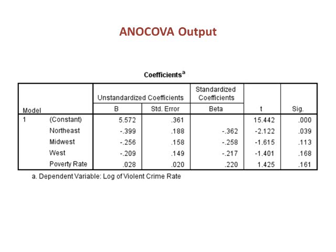The betas for region measure the distance of each region from the reference category. They are not positive or negative. Rather, their sign indicates whether they are above or below the mean of the reference category.